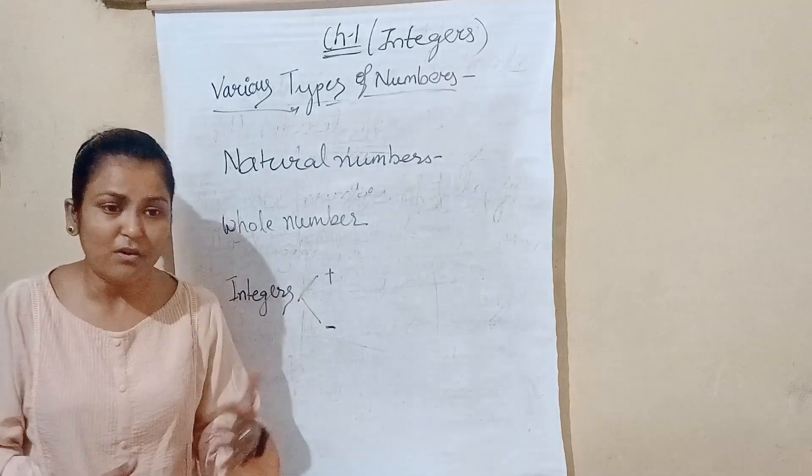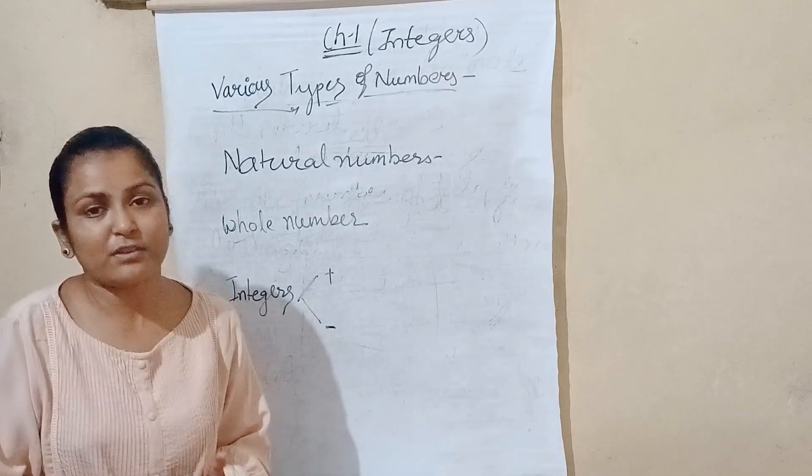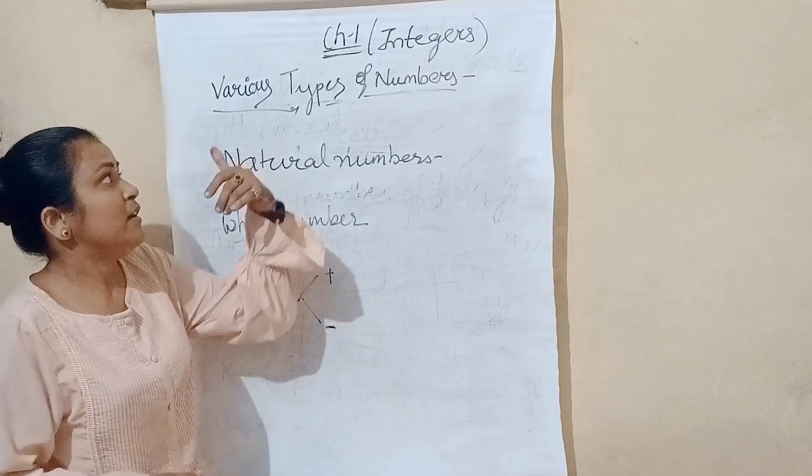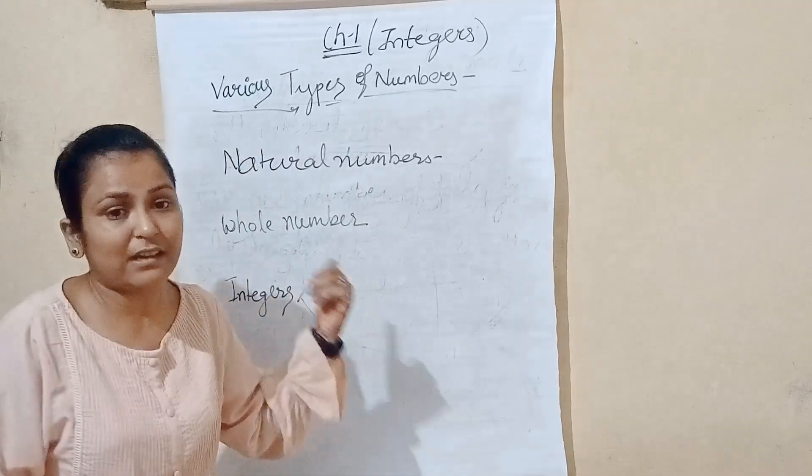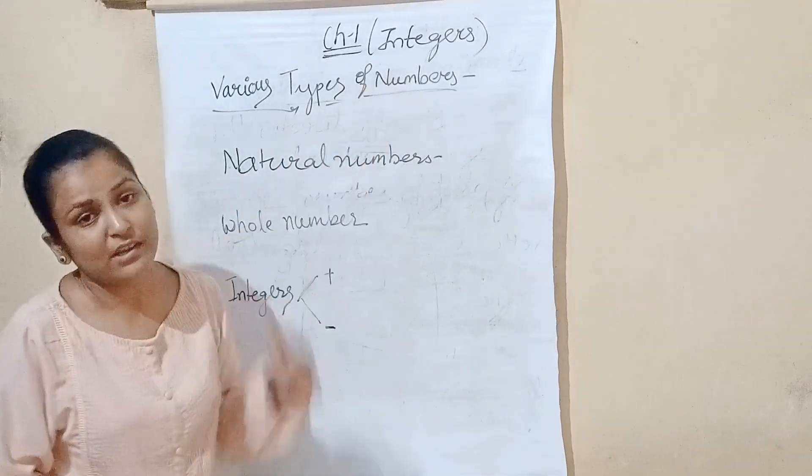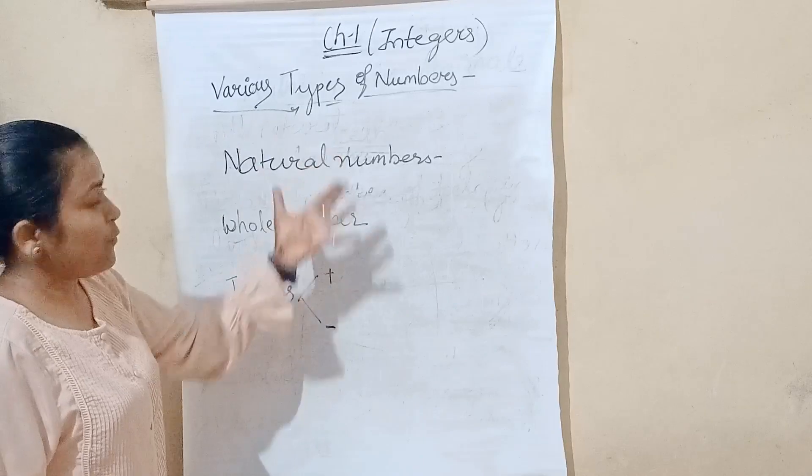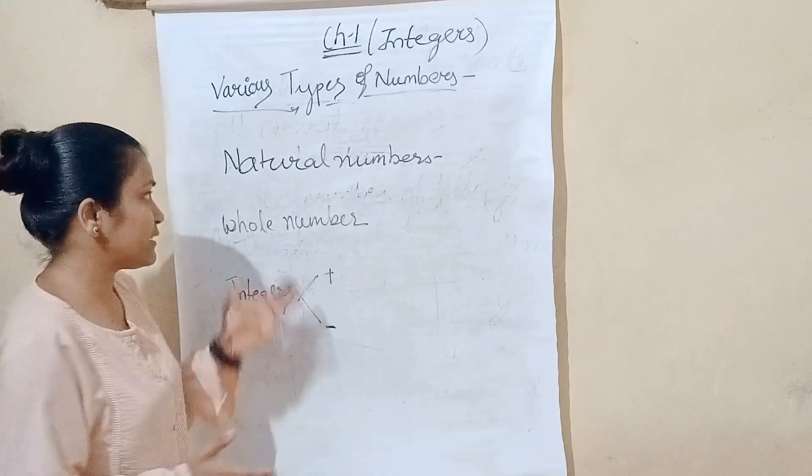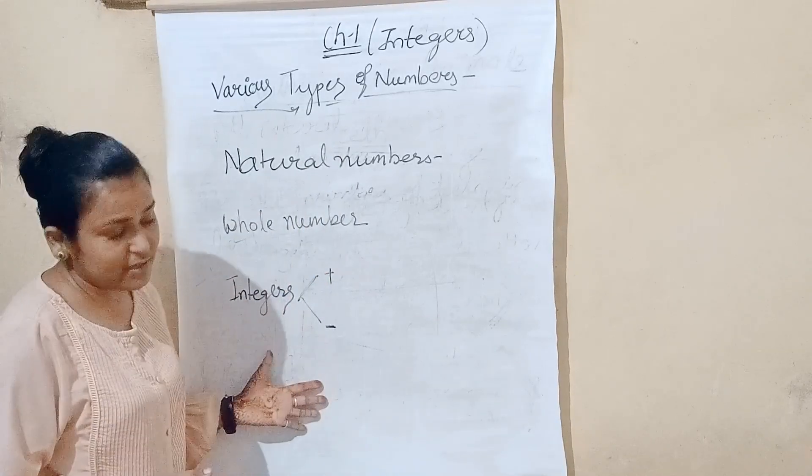But now I am going to study a sequence which is our first chapter. Chapter 1, Integers. There are various types of numbers. Numbers are very different, such as Natural Number, Whole Number and Integers.